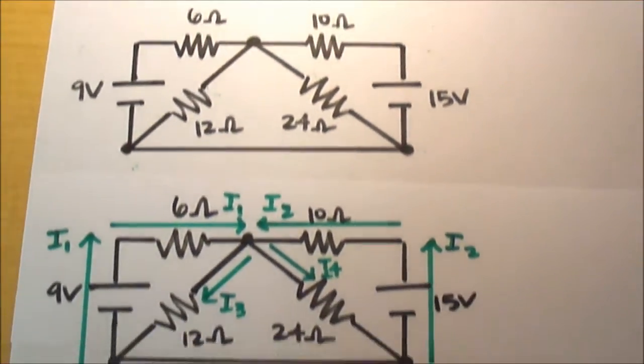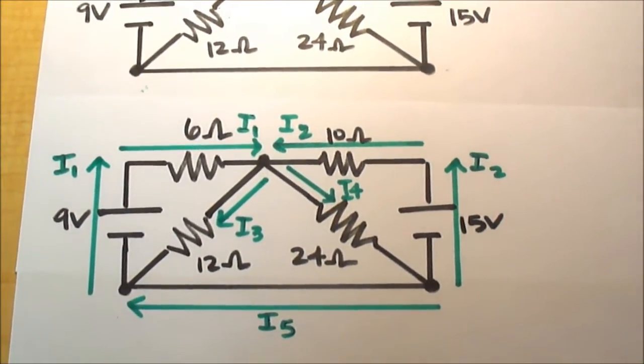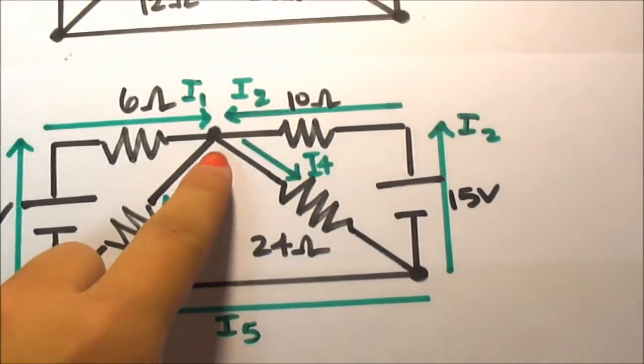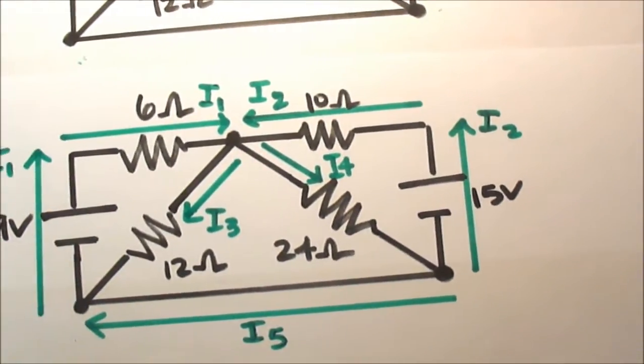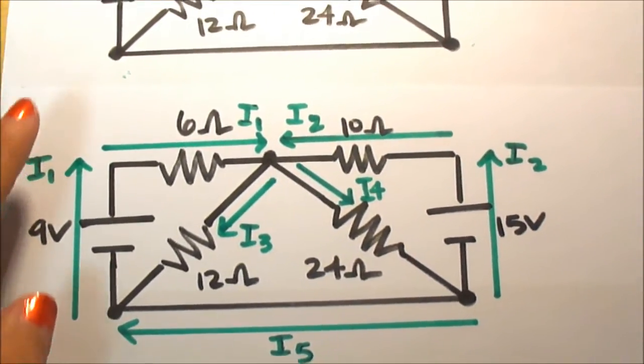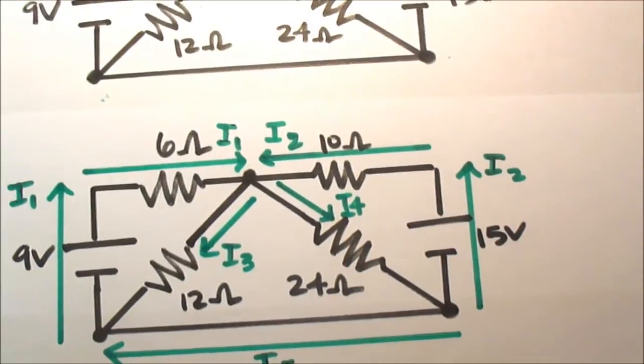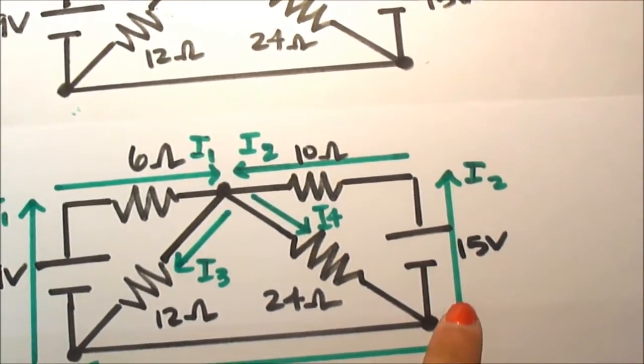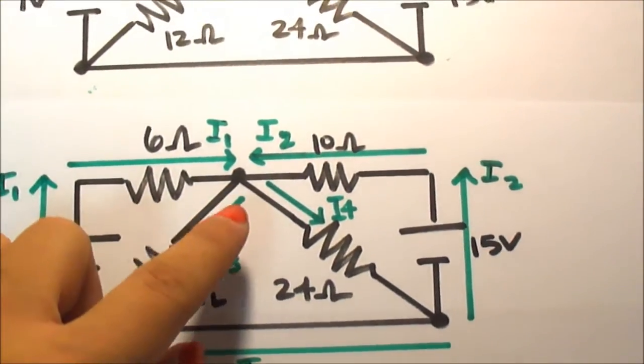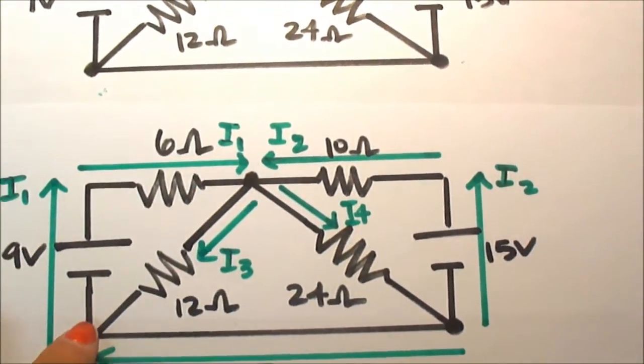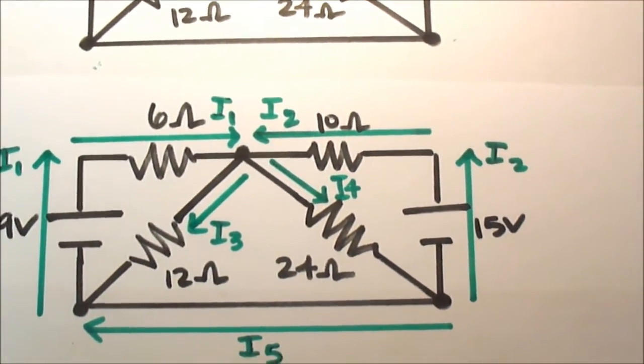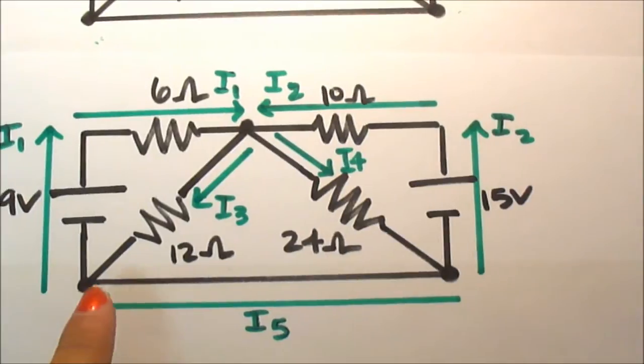The first thing we're going to do is label all of our currents. We have different nodes and everywhere there's a node the current is going to stop. So we have I1 going here and around the corner stopping at the node. Then we have I2 starting down here going up and around the corner again stopping at the node. I3 going from this node to this node, I4 going from this node to this node, and I5 going from this node to this node.